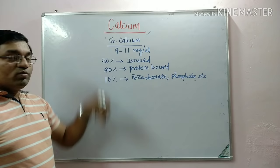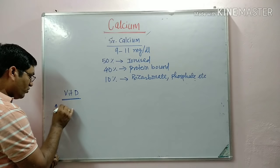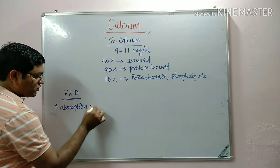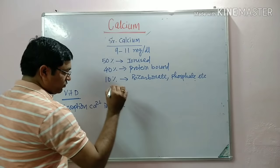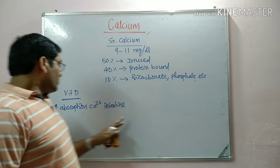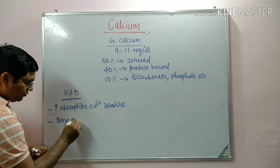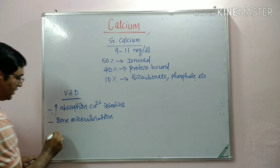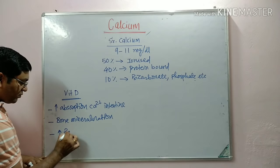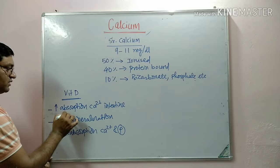Calcium homeostasis is maintained with the help of three hormones. First, vitamin D increases the absorption of calcium from the intestine through the calbindin protein — vitamin D increases the synthesis of calbindin at the genetic level and calbindin increases calcium absorption. Second, vitamin D is important for bone mineralization. Third, it increases the reabsorption of calcium along with phosphorus from the renal tubules.